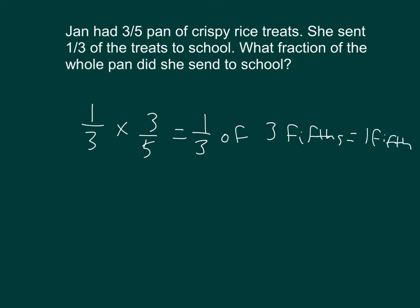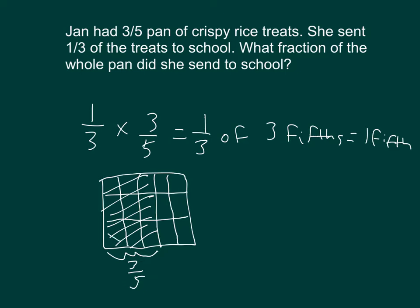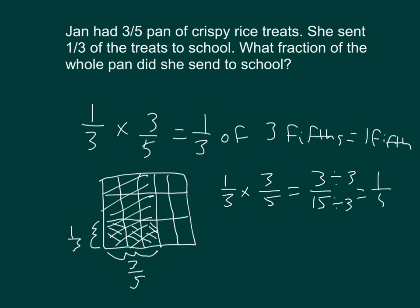Let me show you the area model that matches this equation. We start with three-fifths. And then we take one-third of that. So we end up with three out of fifteen. And then we can reduce three-fifteenths to one-fifth. She brought one-fifth of the pan to school.